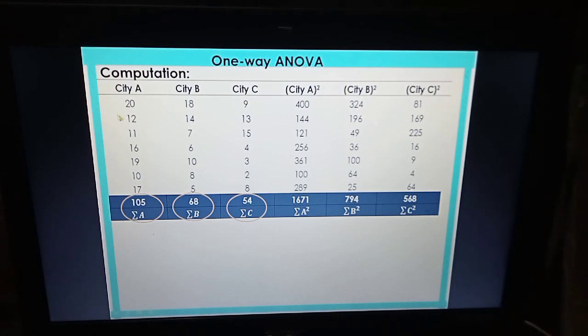Next, square each value. City A squared: 20 times 20 is 400, 12 times 12 is 144, 11 times 11 is 121, and so on. For City B, same thing: 18 times 18 is 324, 10 times 10 is 100. Check these values. City C, we have 9 here, so 9 times 9 is 81. After that, you get the total. I have 1,071 here. Then add these as well so we don't have difficulty computing the required values.